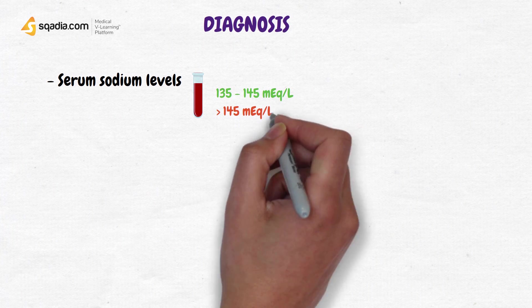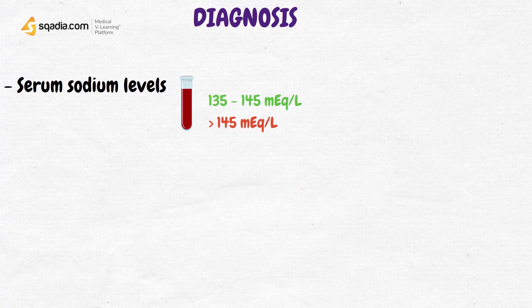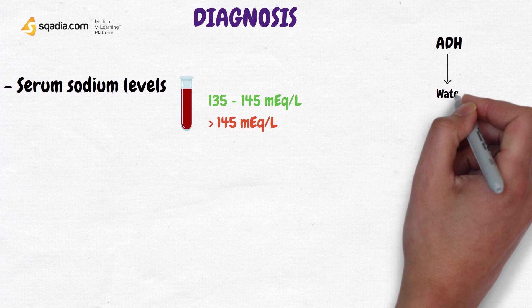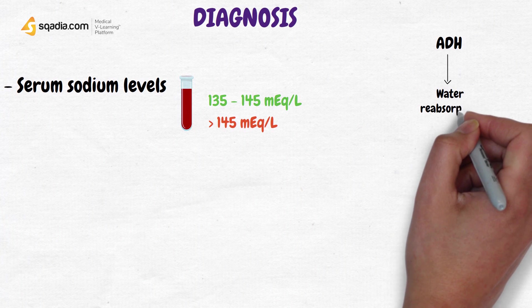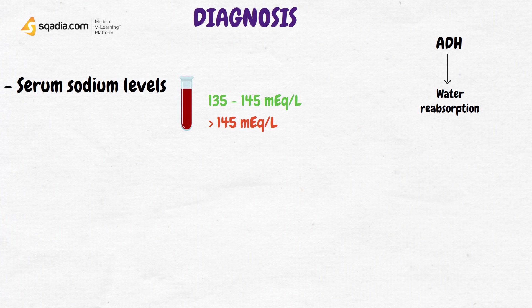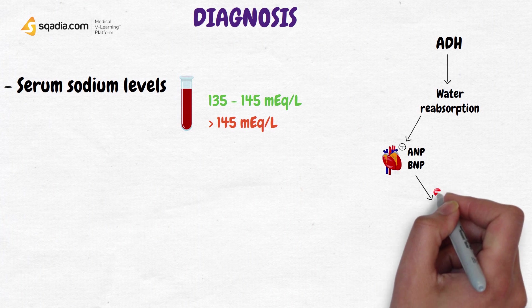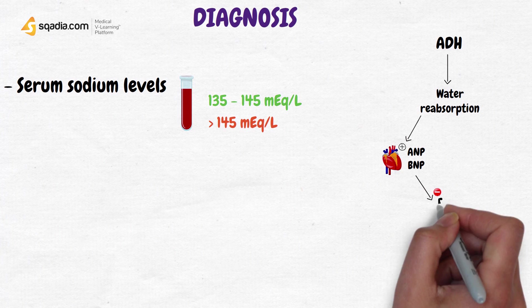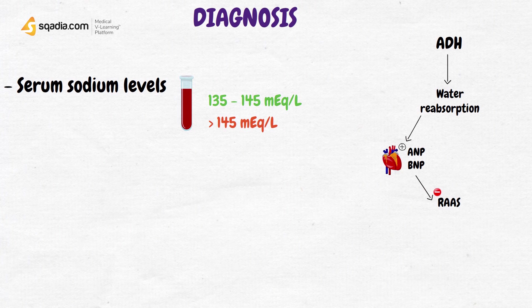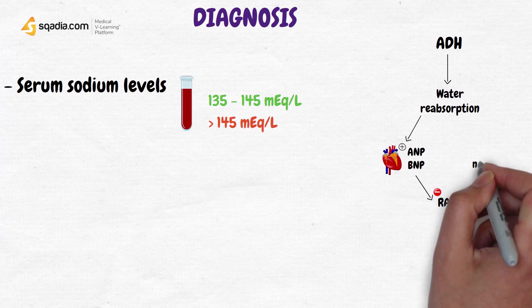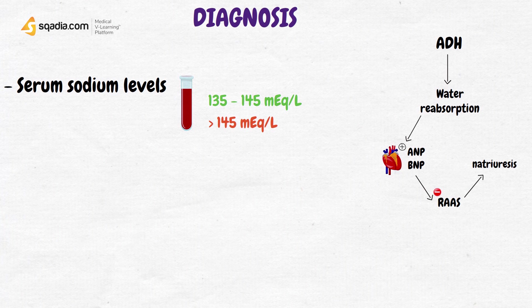because we know from our last video that normally, the increased reabsorption of water by ADH promotes the release of atrial natriuretic peptide and B-type natriuretic peptide, which inhibit the renin-angiotensin-aldosterone system and promote natriuresis. This is why, in a world without ADH, there is sodium retention, and hence high sodium.